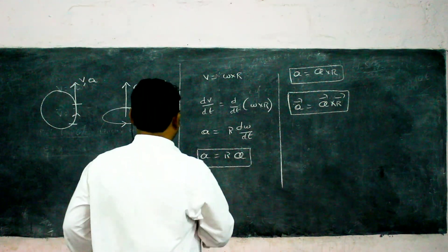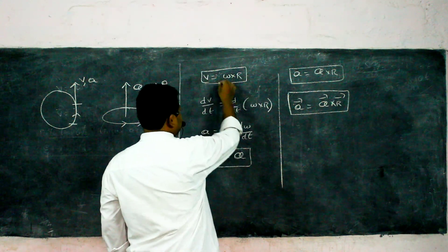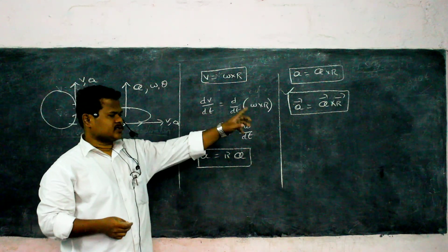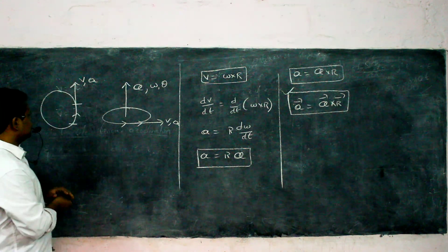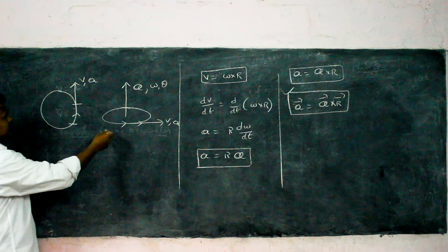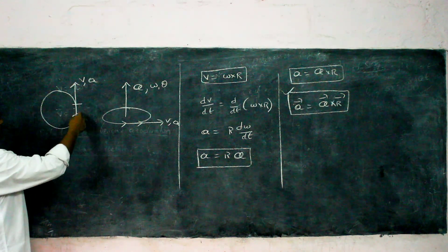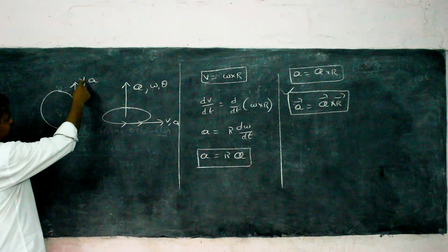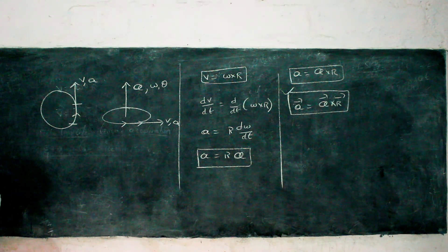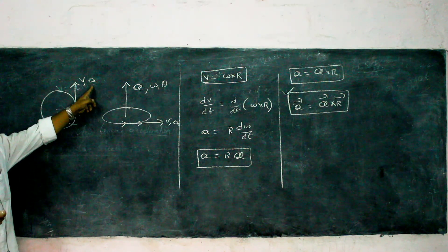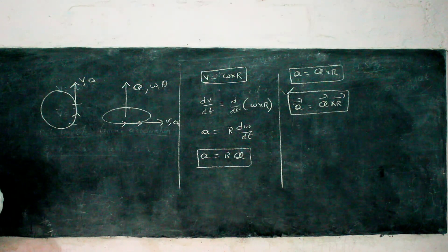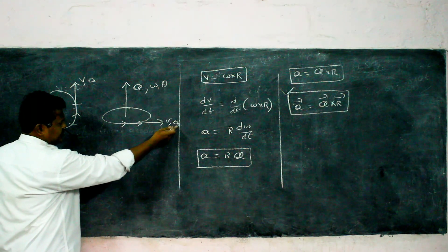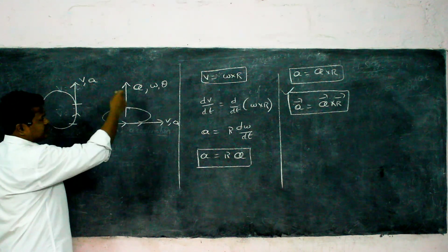If I differentiate the velocity relation, I get a⃗ = α⃗ × R⃗. For a body on a circular path, the direction of velocity and linear acceleration are tangential to the path. What will be the direction of angular acceleration?